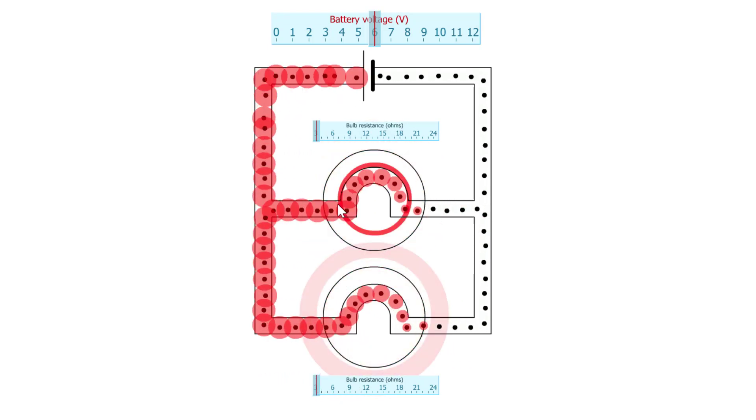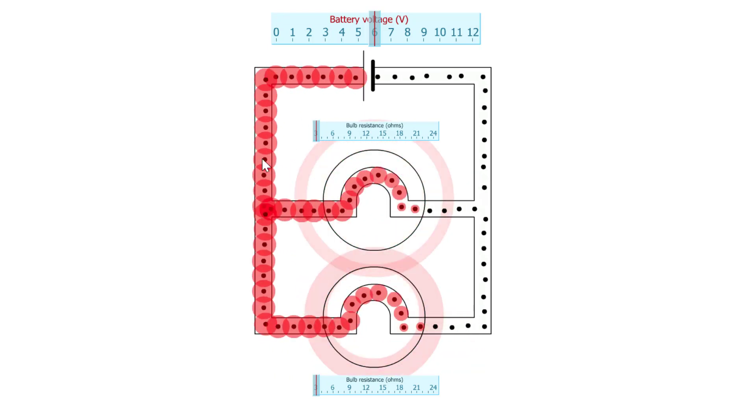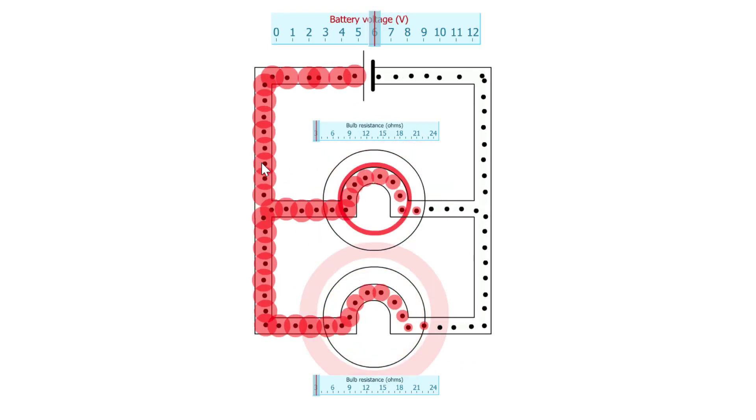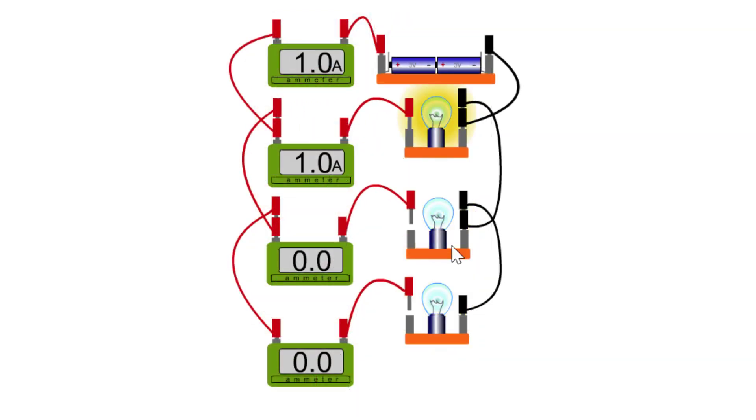So for every extra ampere that flows through the bulb, another ampere has to come from the battery. You can see that in this circuit here.